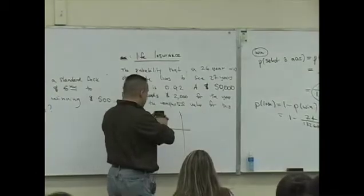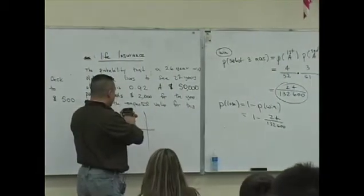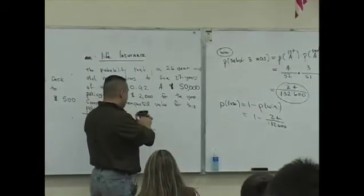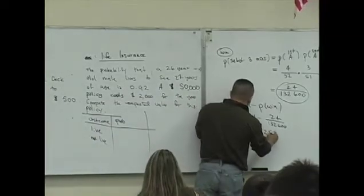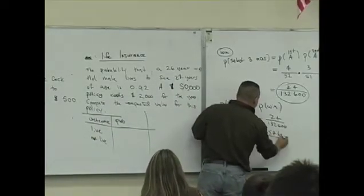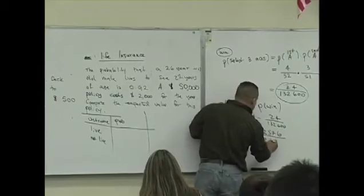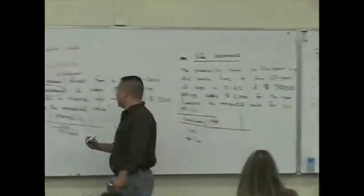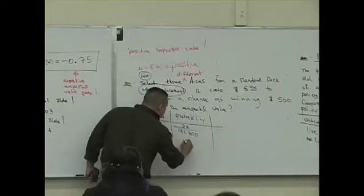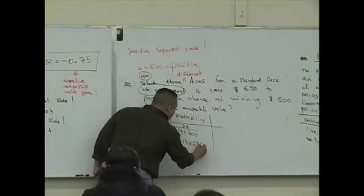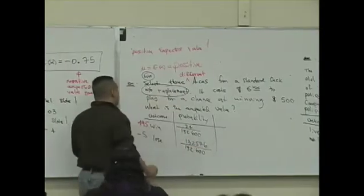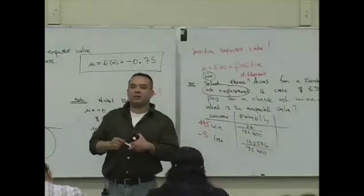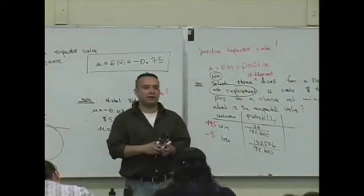So, one minus twenty-four over one hundred and thirty-two thousand six hundred. What is that? Isn't that one hundred and thirty-two thousand six hundred minus twenty-four? I get one hundred and thirty-two thousand five hundred and seventy-six over 132,600. That is vital. This is how you deduce the probabilities. Is that true?